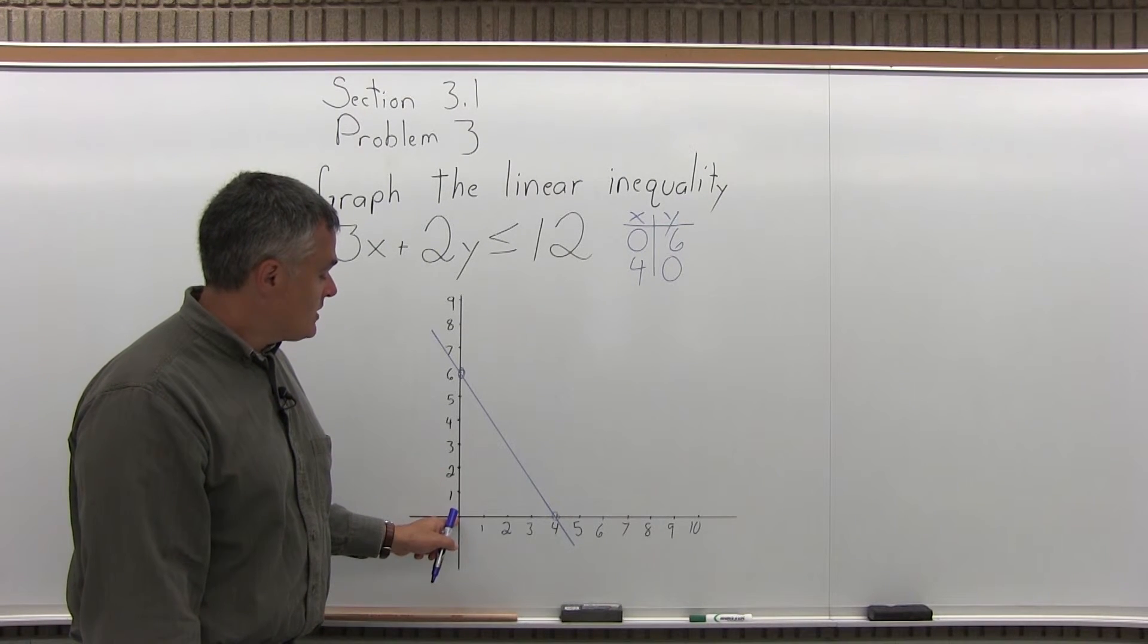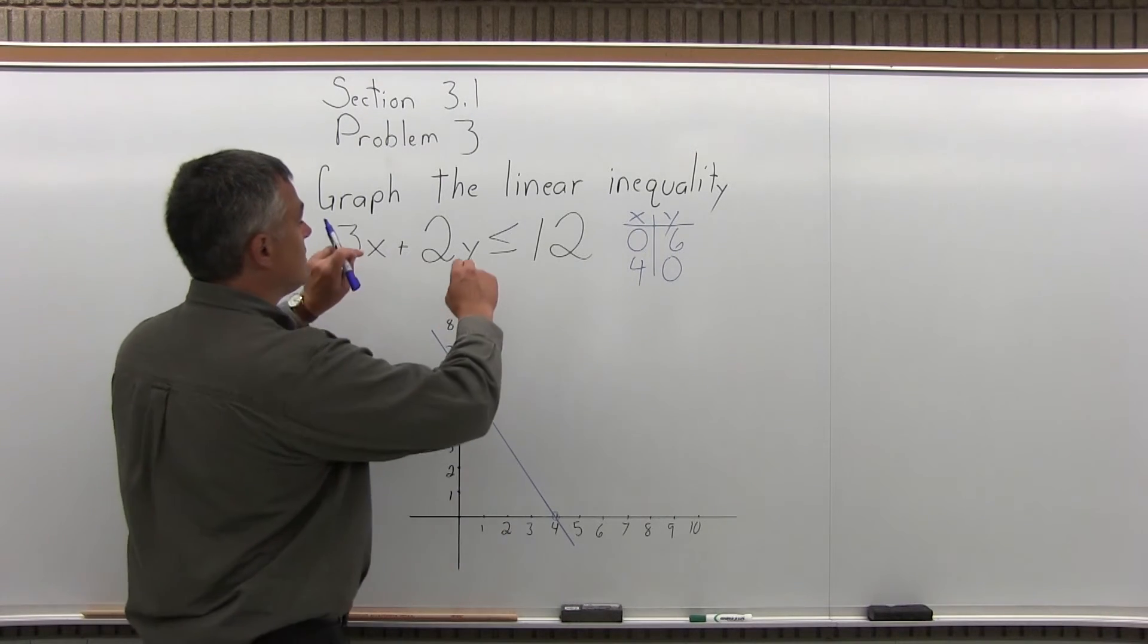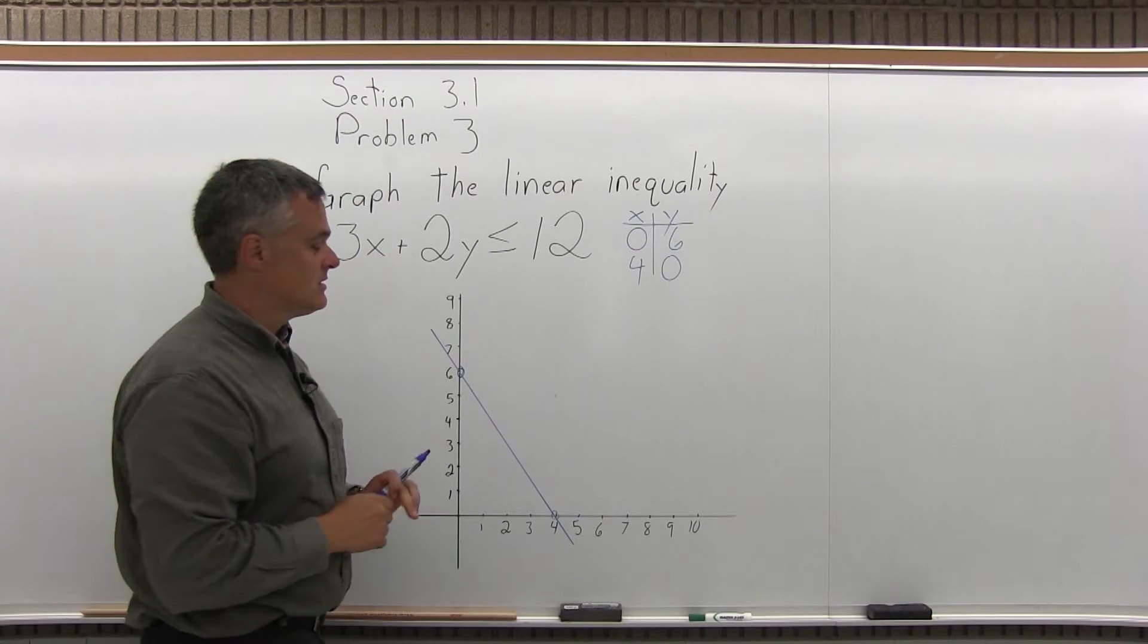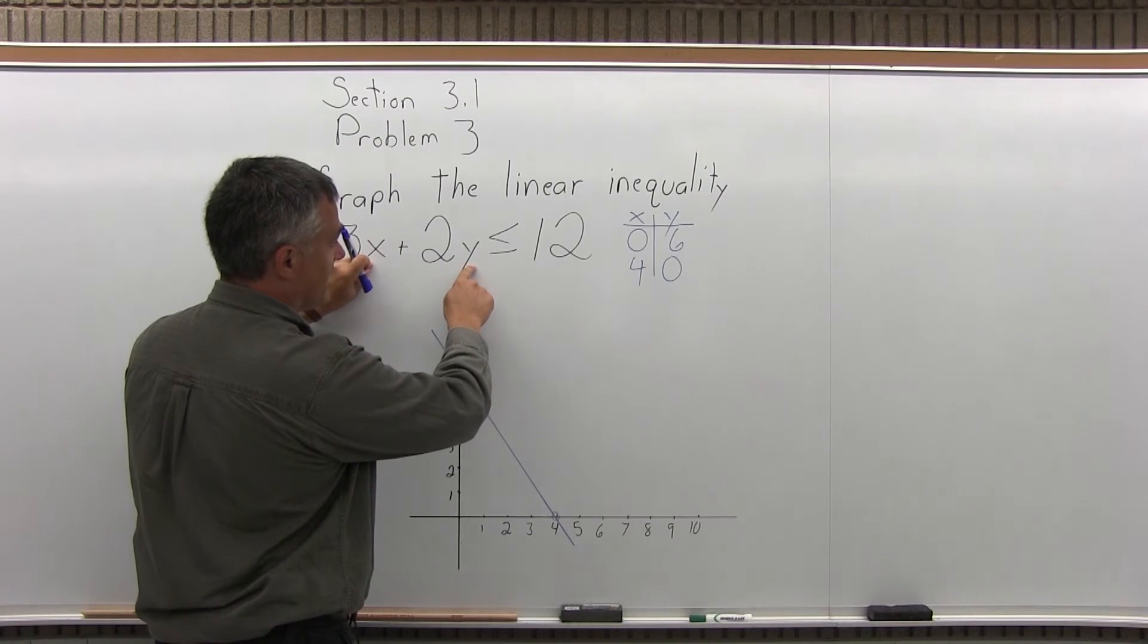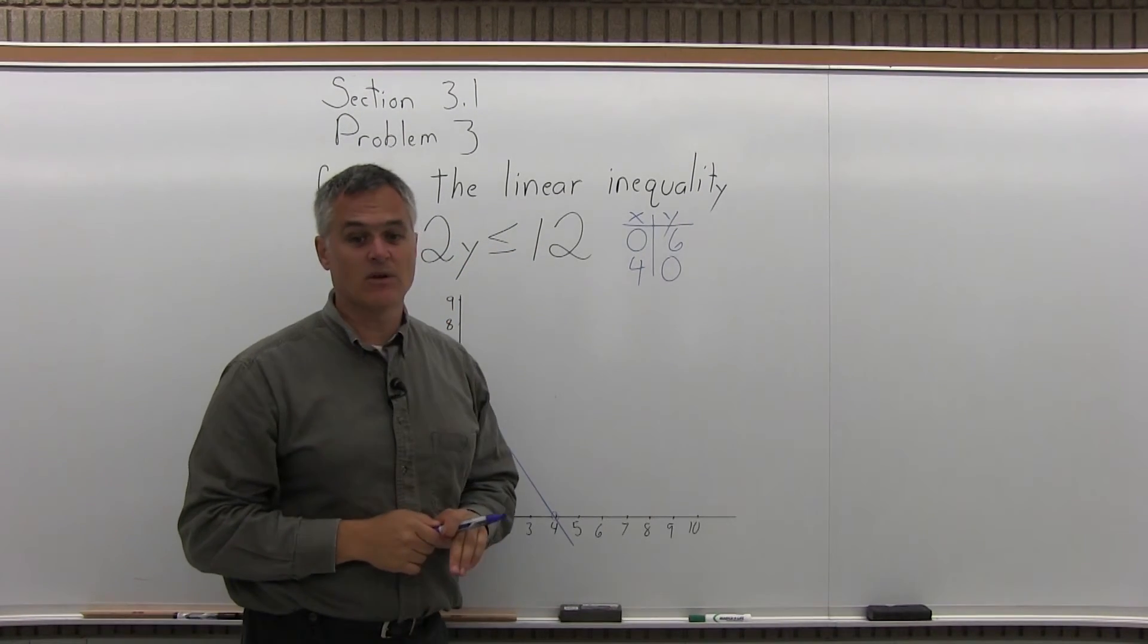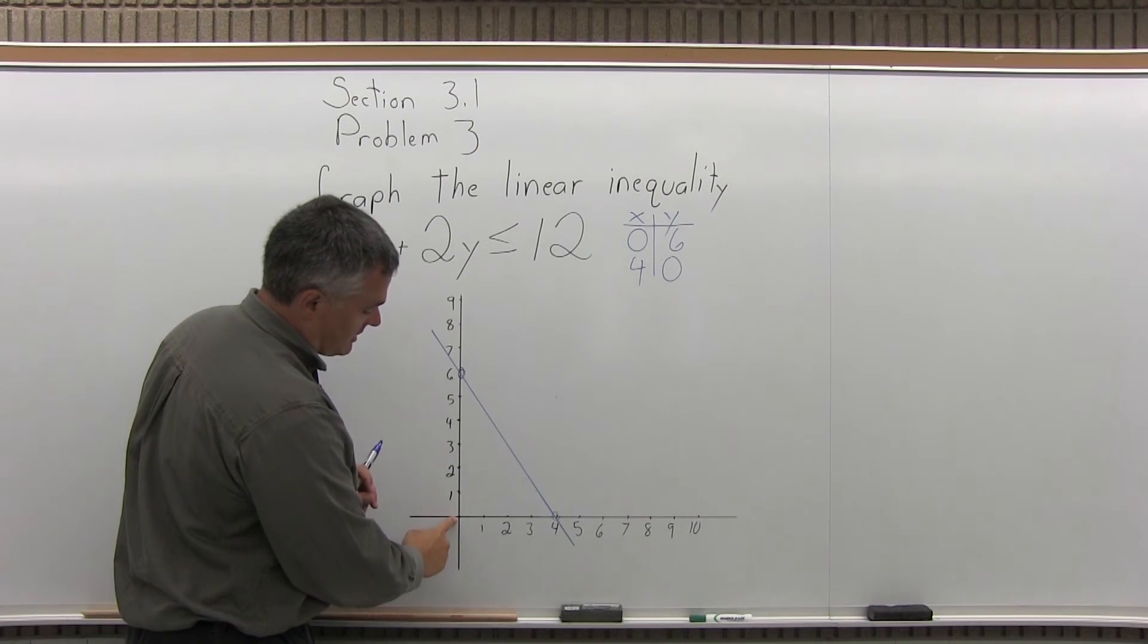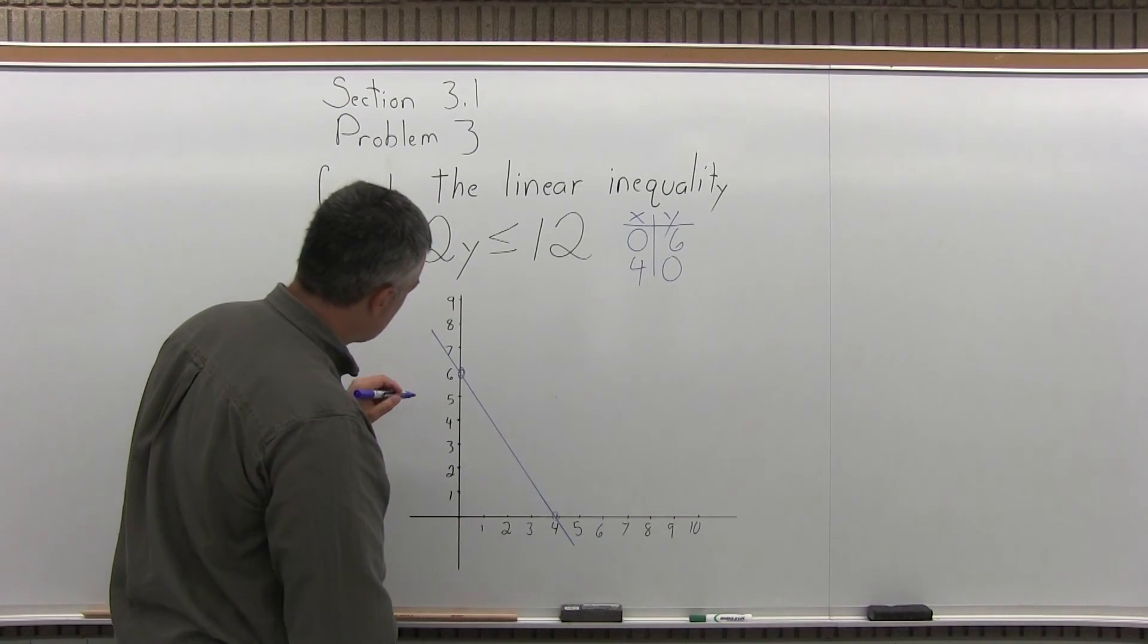So take the coordinates of your test point, x is 0, y is 0. Plug it into the linear inequality that you have to graph and see if the result's true or false. So if I put in 0 for x and 0 for y, the coordinates of my test point, the result I get will be 0 is less than 12, which is certainly true. 0 is less than 12. So that means that my test point being down here giving me a true result means that the underneath side is the shaded side.